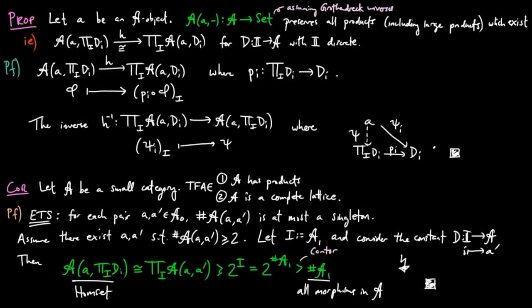And it is this result which clarifies why we included the condition of smallness in defining a category to have products, because otherwise we would obtain just these somewhat trivial categories when we say a category has products.